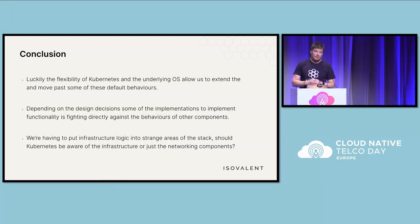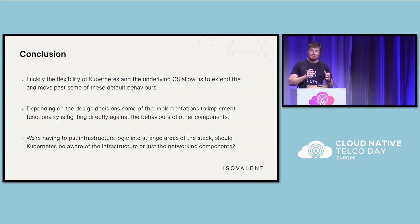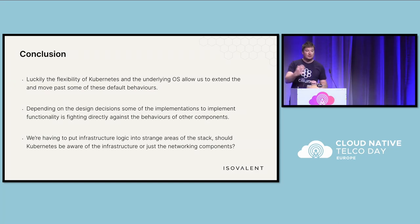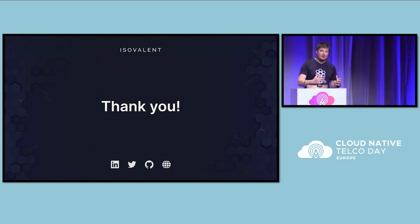In conclusion, the flexibility of Kubernetes and the underlying operating systems is allowing us to move past these default behaviors, which have made sense in the cloud but are becoming a hindrance and a burden in telco and on-prem environments. Depending on design decisions, some of the hacks we've had to implement almost fight against existing components — for instance, some egress solutions fight against the default behaviors of CNIs. A final thought: we're having to put infrastructure logic into different areas of the Kubernetes stack. Should it go into Kubernetes itself or should it live elsewhere? That's a quick overview of the issues we're facing getting traffic in and out, and some of the ways we're getting past those problems. Thank you very much for your time today and hopefully you have a good conference.